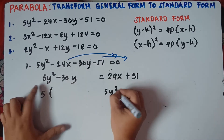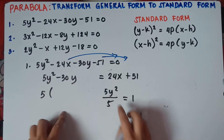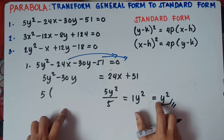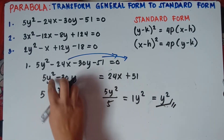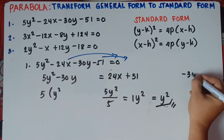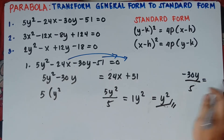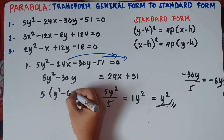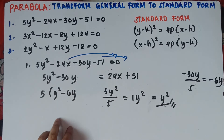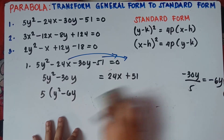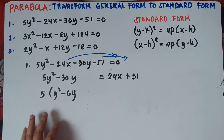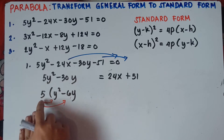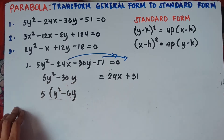Dividing: 5y squared divided by 5 is y squared, and negative 30y divided by 5 is negative 6y. So we get 5 times the quantity y squared minus 6y, which equals 24x plus 51. You can verify by distributive property: 5 times y squared is 5y squared, and 5 times negative 6y is negative 30y — correct.